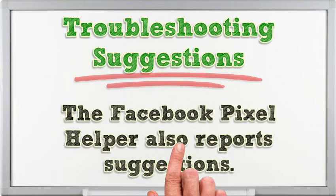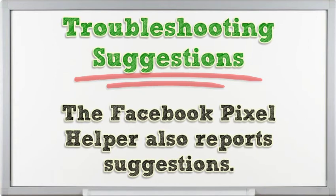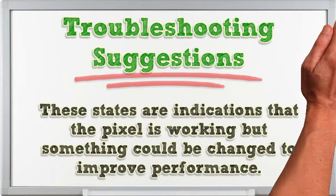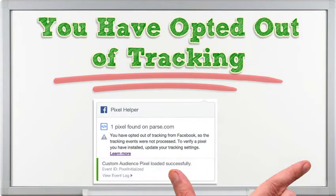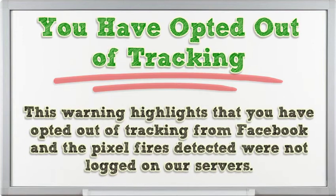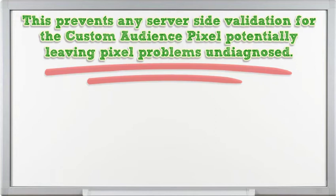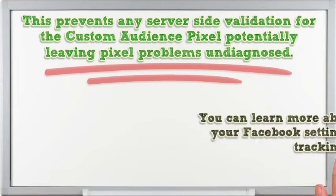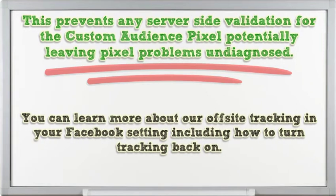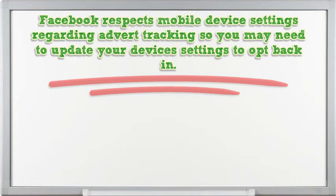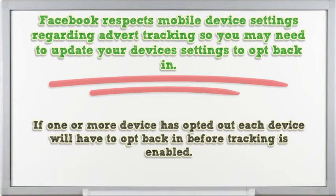Troubleshooting Suggestions. The Facebook Pixel Helper also reports suggestions — these are indications that the Pixel is working but something could be changed to improve performance. You have opted out of tracking: this warning highlights that you have opted out of tracking from Facebook and the Pixel fires detected were not logged on our servers. This prevents any server-side validation for the custom audience Pixel, potentially leaving Pixel problems undiagnosed. You can learn more about our off-site tracking in your Facebook settings, including how to turn tracking back on. Facebook respects mobile device settings regarding ad tracking, so you may need to update your device's settings to opt back in. If one or more devices have opted out, each device will have to opt back in before tracking is enabled.